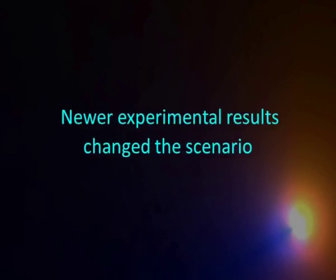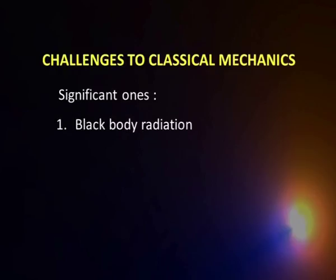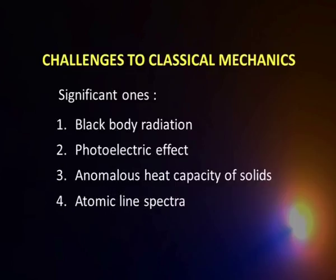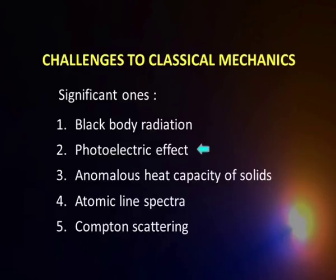In the backdrop of this scenario where everything seemed predictable, certain experimental findings posed a challenge to classical mechanics. The five significant challenges are: black body radiation, photoelectric effect, anomalous heat capacity of solids, atomic line spectra, and Compton scattering. The last one is not a challenge per se but it also could not be explained on the basis of classical mechanics. In today's episode I will discuss the first two of these in a little more detail.